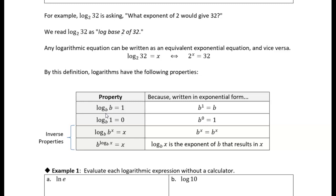These next two I would consider inverse properties, because the log is the inverse of an exponential function. If you recall, the inverse of the original function applied to its input should give you X, and applying the function to the inverse also gives you X. So the input to the logarithm is B to the X, and we get X back. You can rewrite this in exponential form: the exponent on B that gives you B to the X is, of course, X.